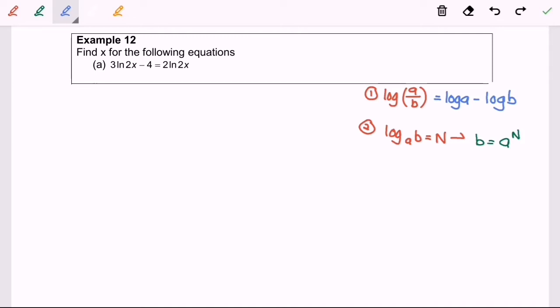So kindly refer to 12a: 3 ln 2x minus 4 equals 2 ln 2x. First I'm going to rearrange, so we have 3 ln 2x minus 2 ln 2x equals 4.